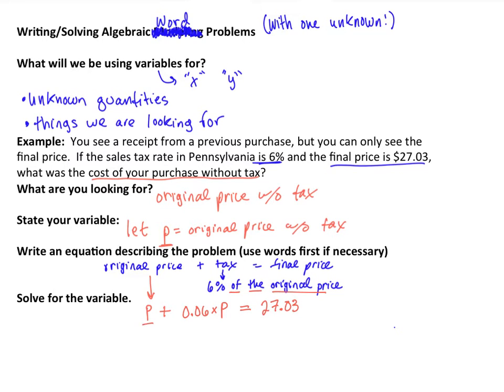Combining like terms here, this is 1P, 1 plus 0.06, this is a total of 1.06. That's just adding like quantities, P, equal to $27.03.